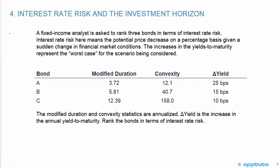This is the blue box example from the text. A fixed income analyst is asked to rank three bonds in terms of interest rate risk. Interest rate risk here means the potential price decrease on a percentage basis given a sudden change in financial market conditions. The increases in the yields to maturity represent the worst case for the scenario being considered. We've got three bonds — bond A, bond B, bond C — and we're given the modified duration, the convexity, and the change in the yield.